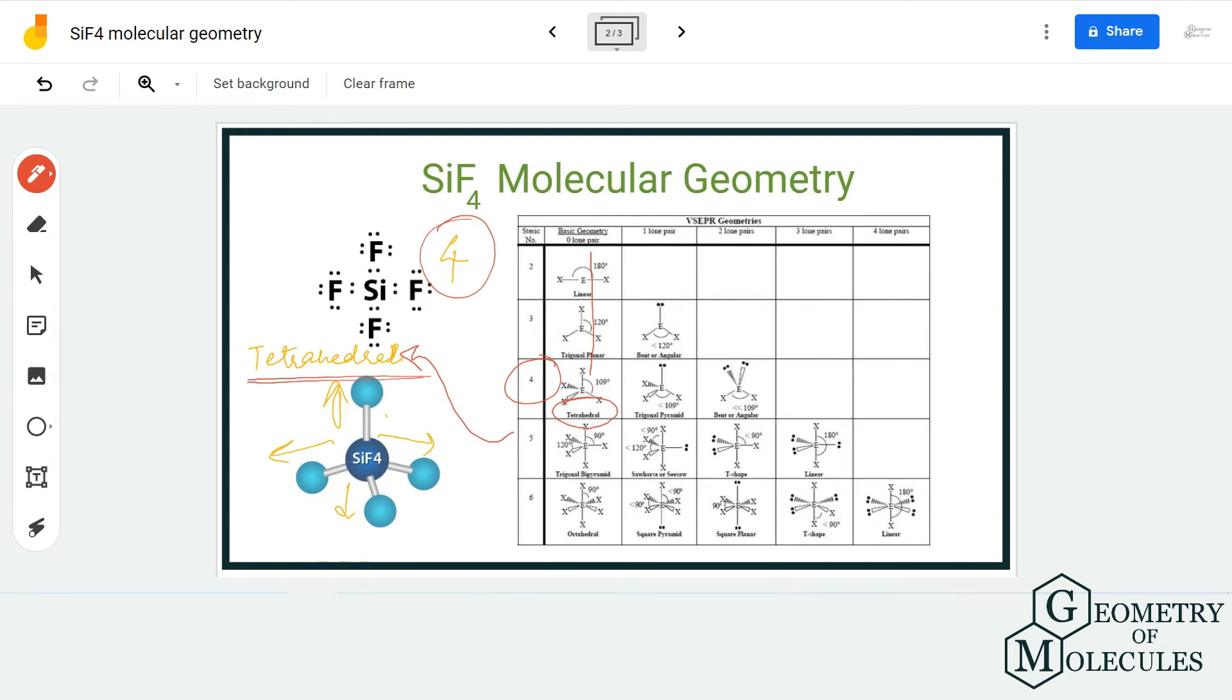Hence the molecular geometry of SiF4 molecule is tetrahedral. The bond angles are 109.5 degrees, so the bond angles between these atoms will be 109.5 degrees. Hence the molecular geometry of SiF4 is tetrahedral.